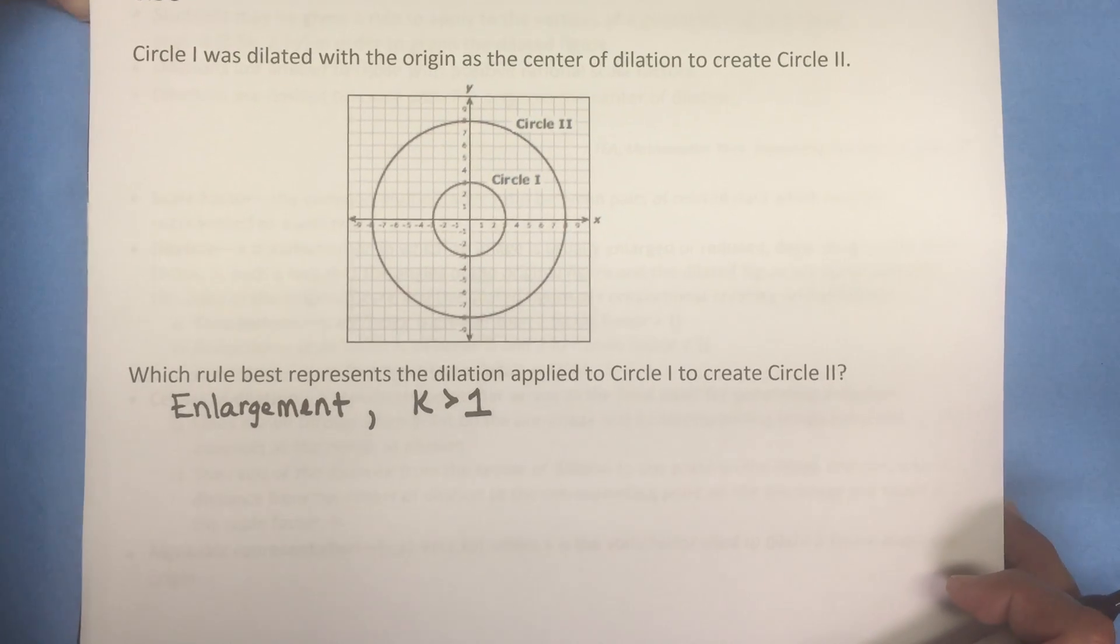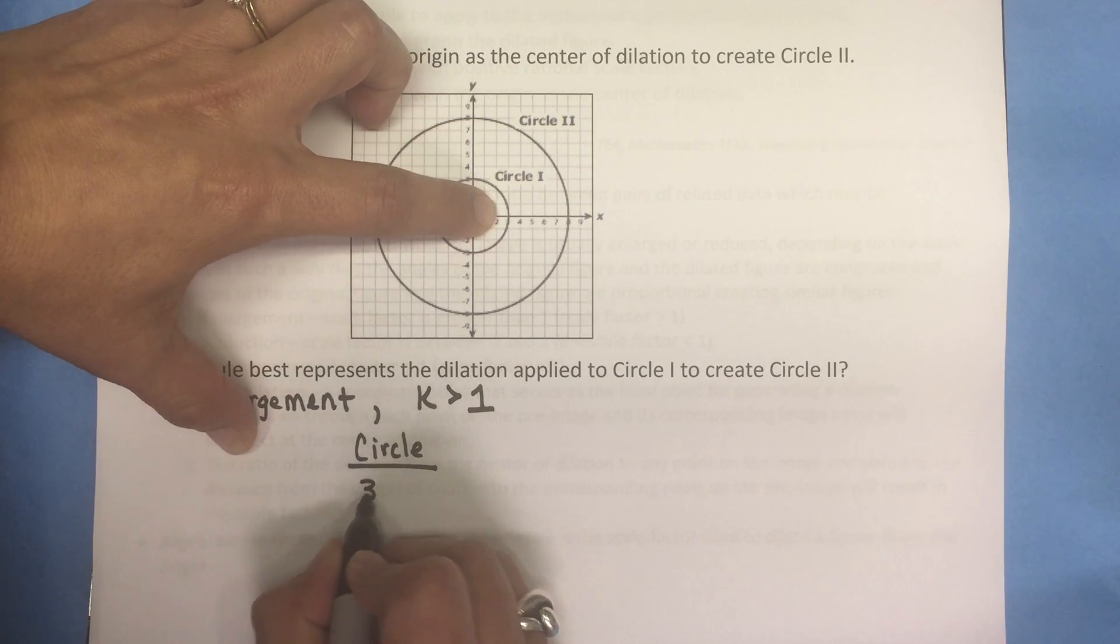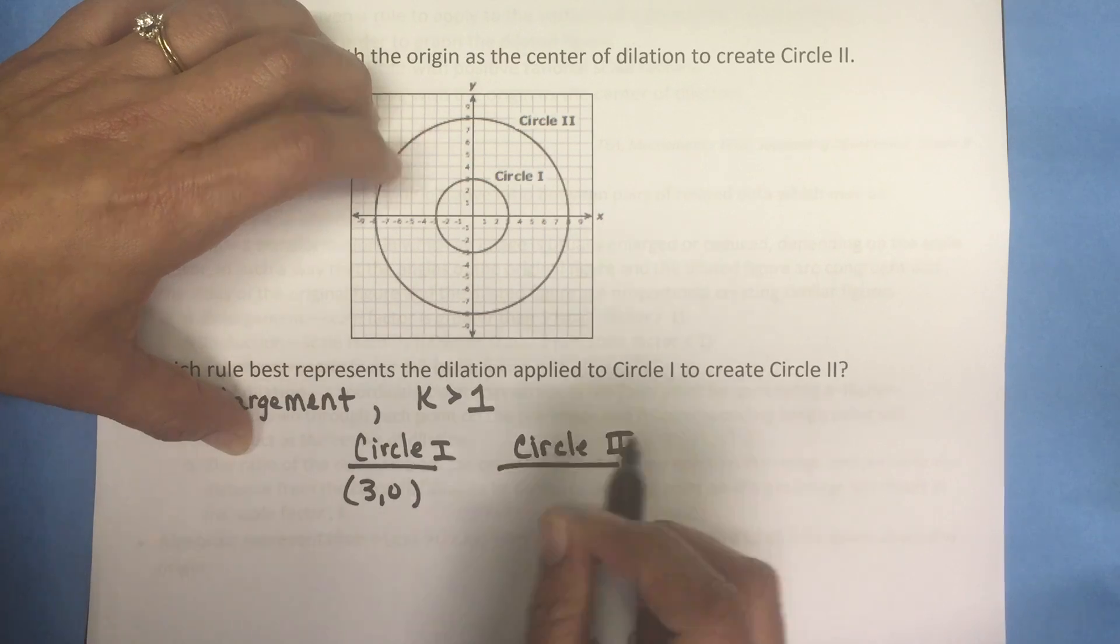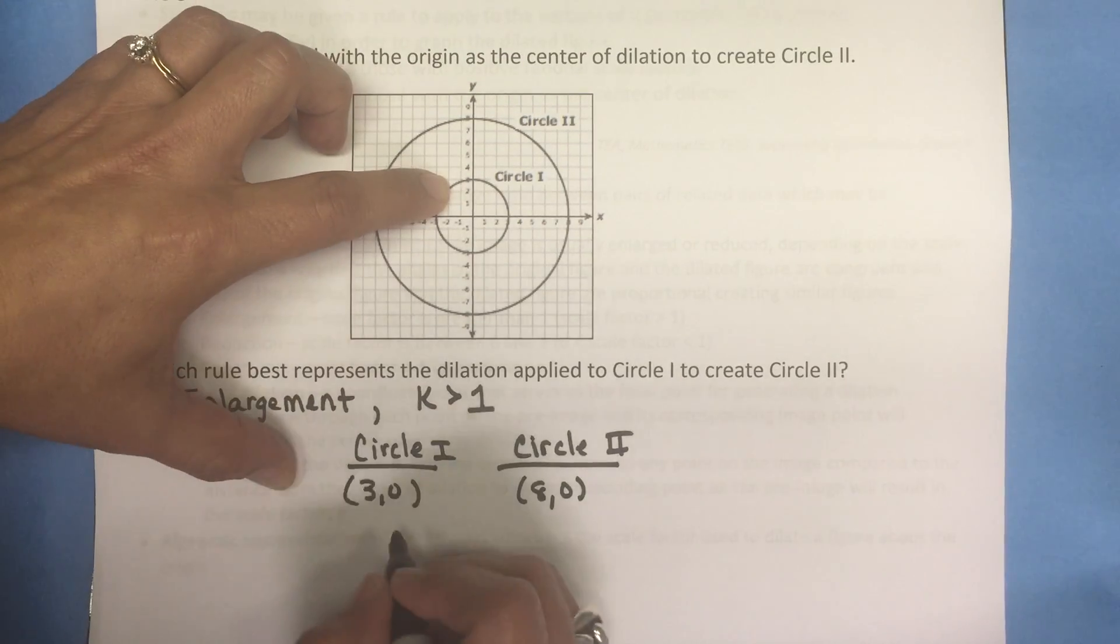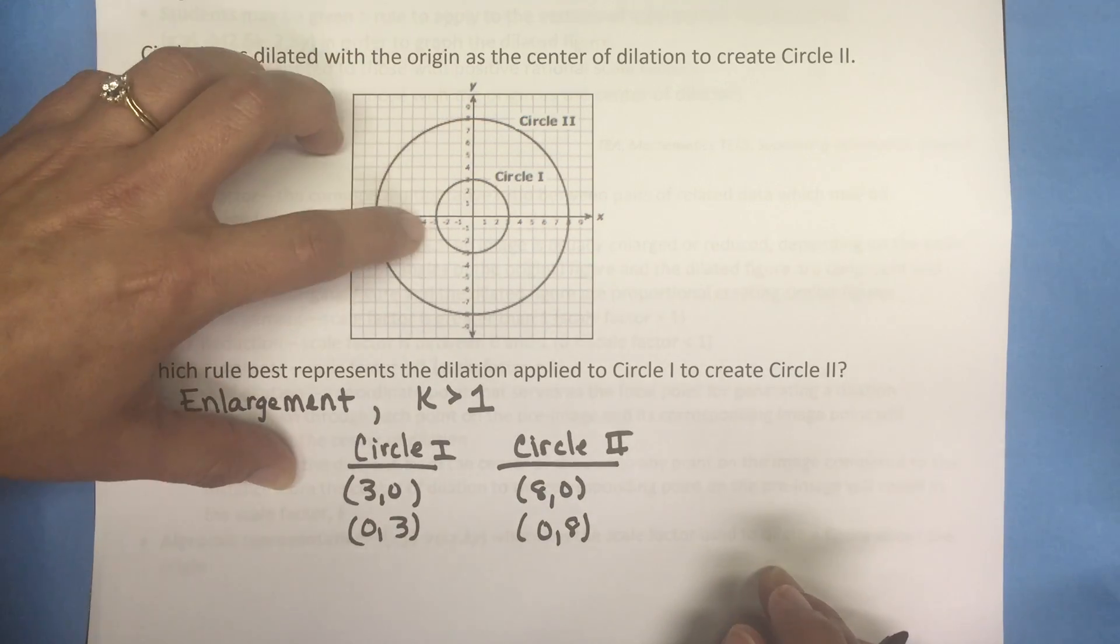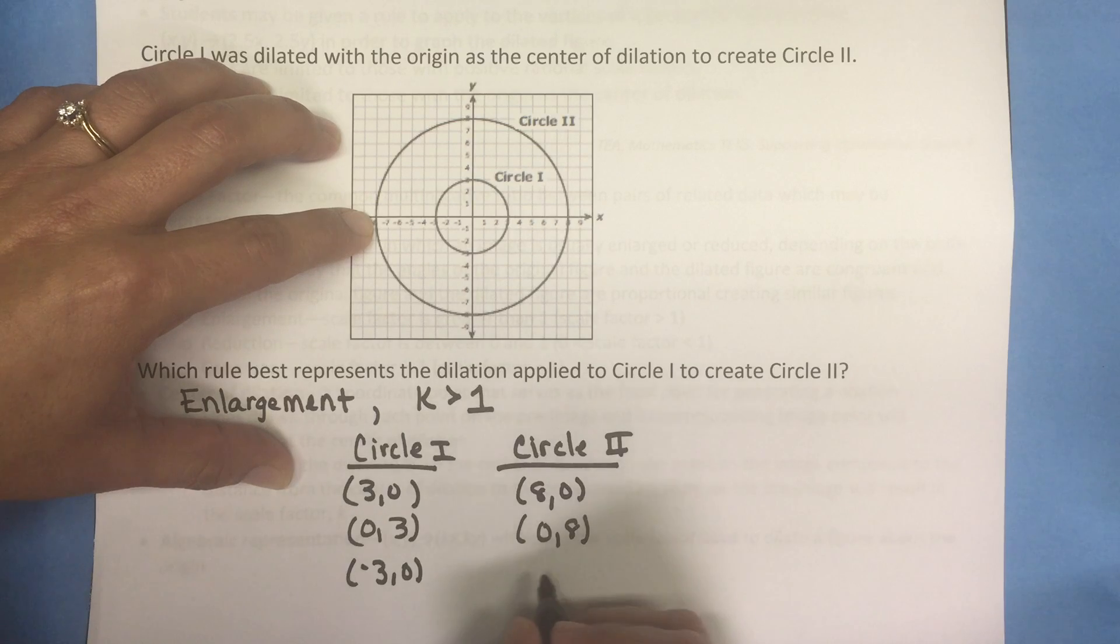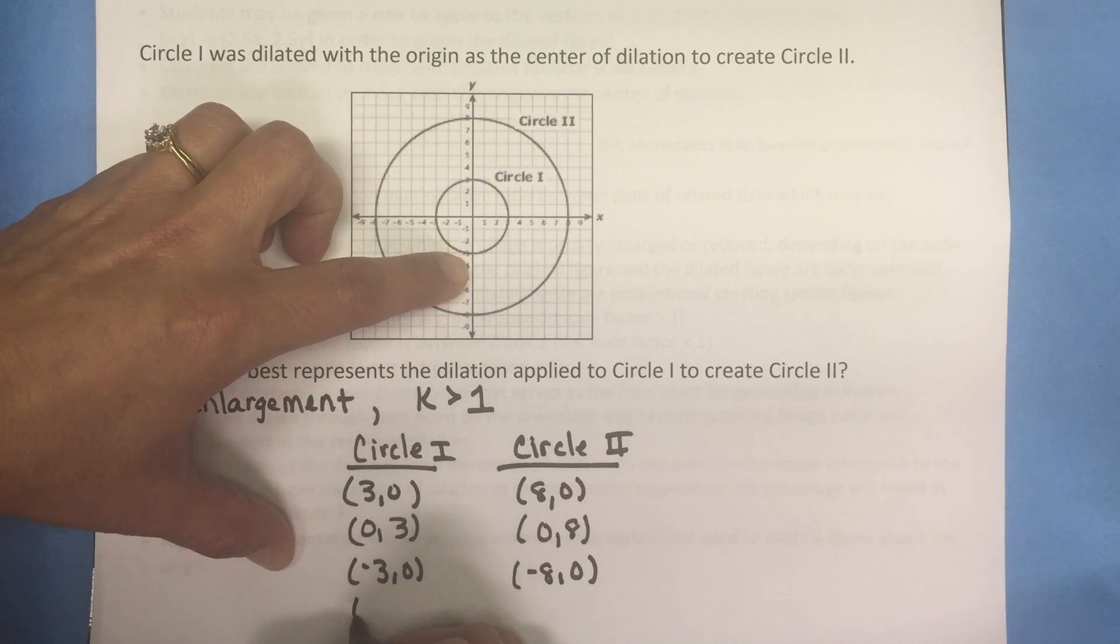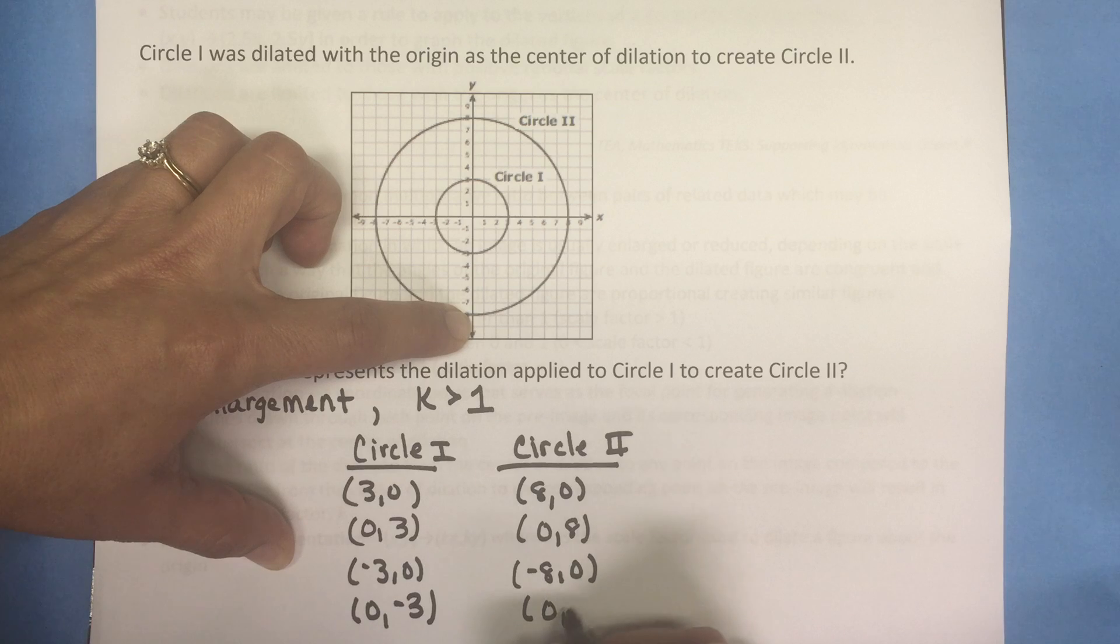So let's look at the coordinates from each circle. From circle 1 I'm going to look at the coordinate (3, 0). A corresponding coordinate would be (8, 0) on circle 2. On circle 1 the coordinate (0, 3) corresponds to (0, 8) on circle 2. Another coordinate from circle 1 is (-3, 0) with corresponding point (-8, 0) on circle 2. One more point from circle 1 is (0, -3) and the corresponding point on circle 2 is (0, -8).